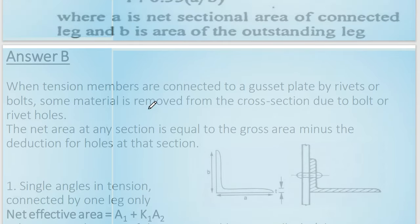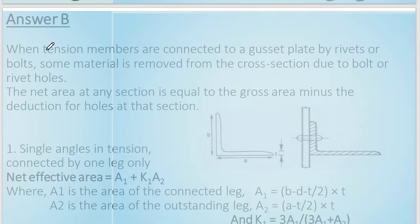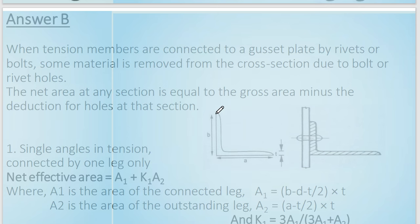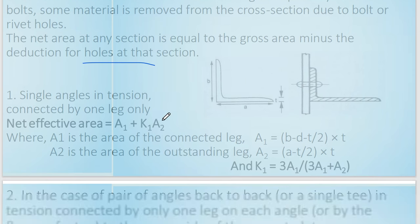When tension members are connected to a gusset plate by rivets or bolts, some material is removed from the cross section due to bolt or rivet holes. The net area of any section equals the gross area minus the deduction for holes at that section.